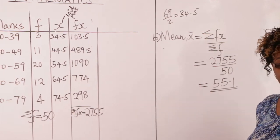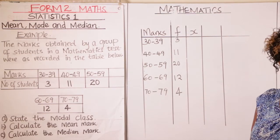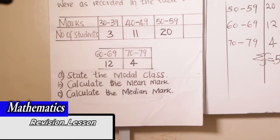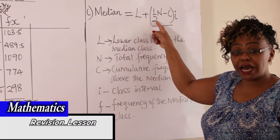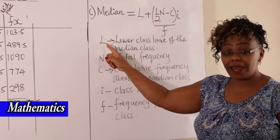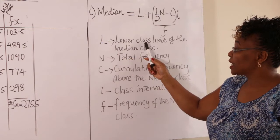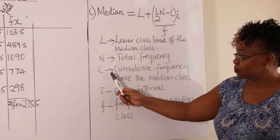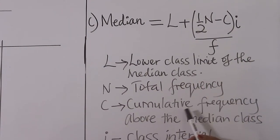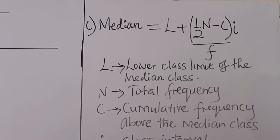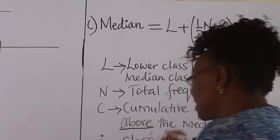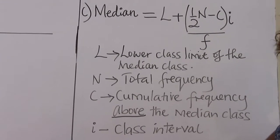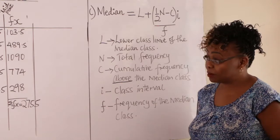Now part (c): calculate the median mark. The formula for the median is: L plus, in brackets, half of N minus C, times I, divided by F. Here L refers to the lower class limit of the median class; C is the cumulative frequency just above the median class; I is the class interval; and F is the frequency of the median class.